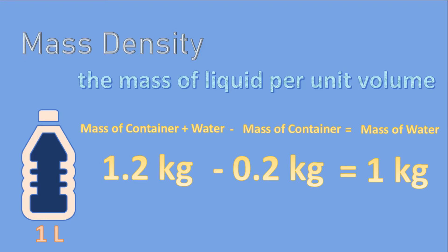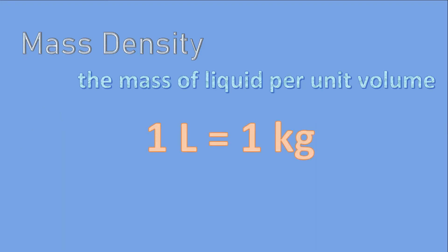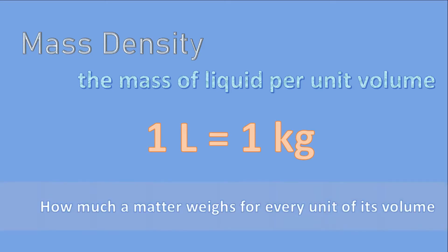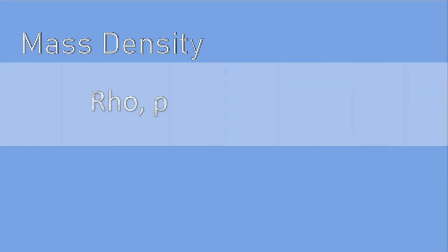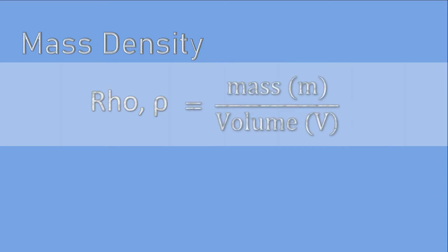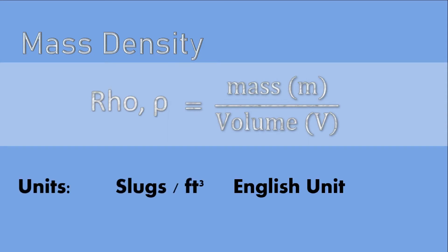We can say that 1 liter of water weighs and will always weigh 1 kilogram. Mass density answers how much a matter — whether solid, liquid, or gas — weighs for every unit of its volume. Mass density is represented by the symbol rho and computed using rho equals mass over volume. The unit is slugs per cubic foot for English and kilogram per cubic meter for SI.